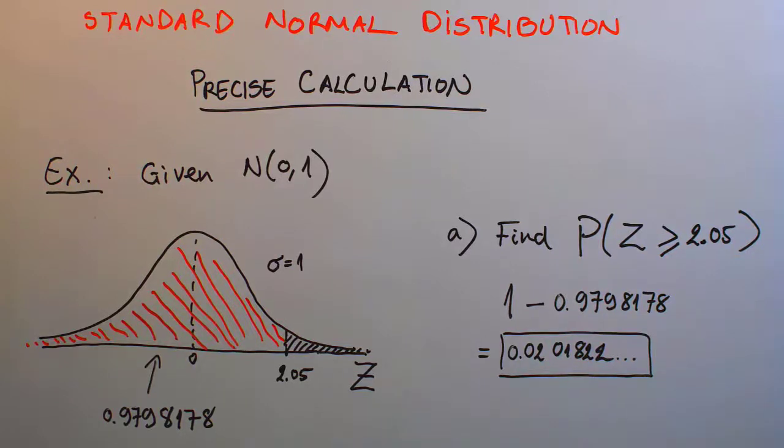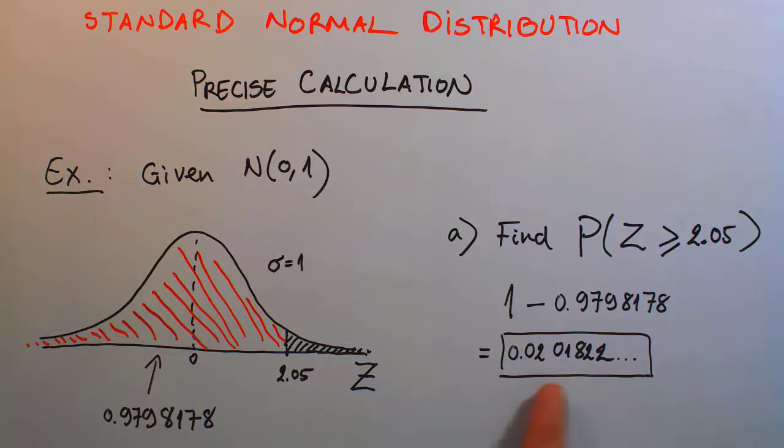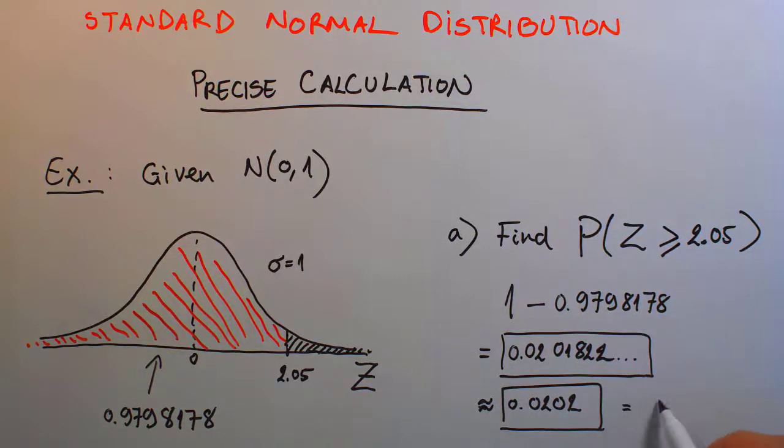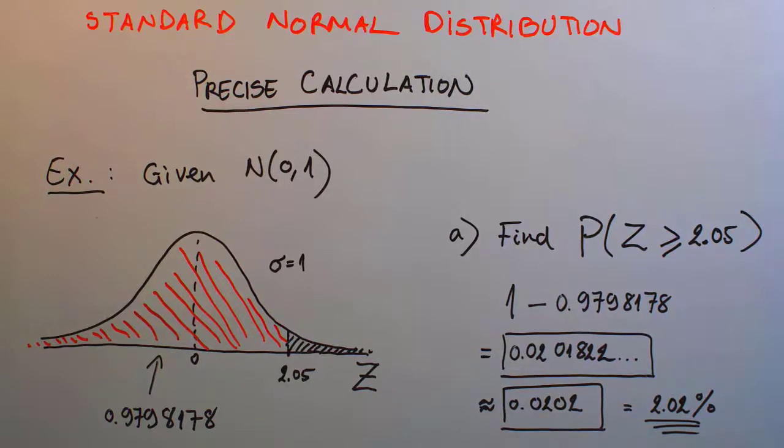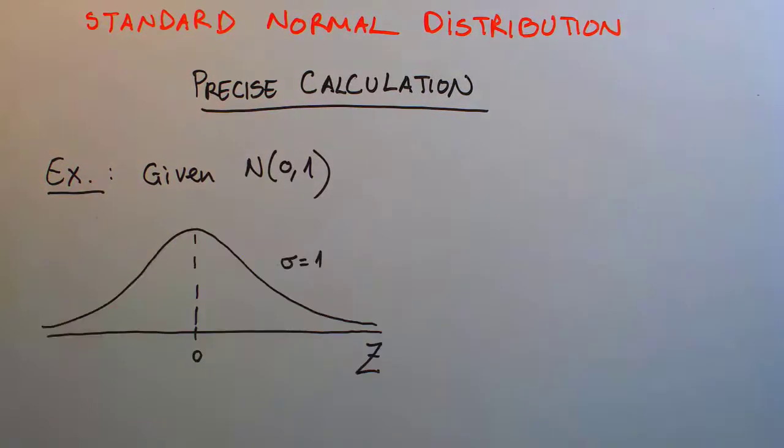For a lot of online assignments these days, or many textbooks, they're asking for rounding your final answers to 4 decimals. So this is about 0.02. This is about 2.02% of time we're going to have a z-score being above or equal to 2.05. That's another way to interpret your final answer here.